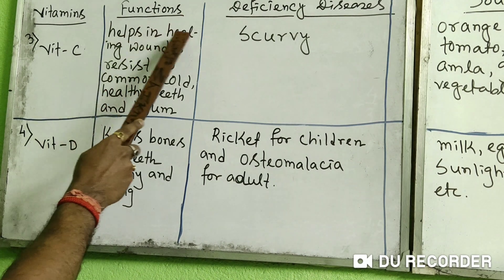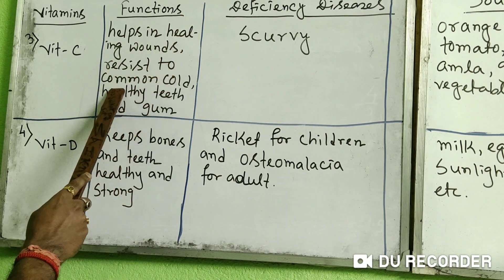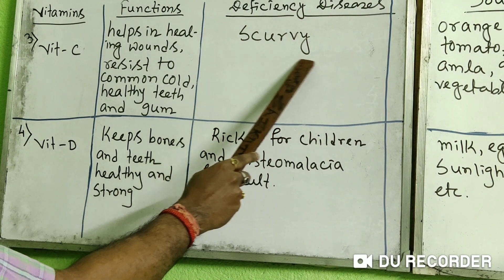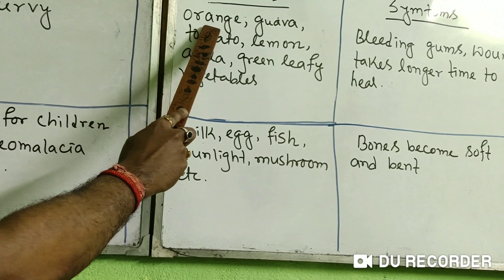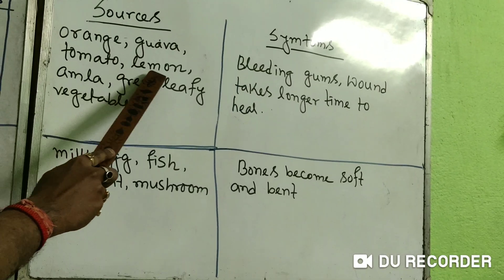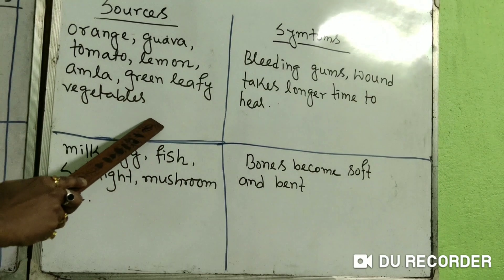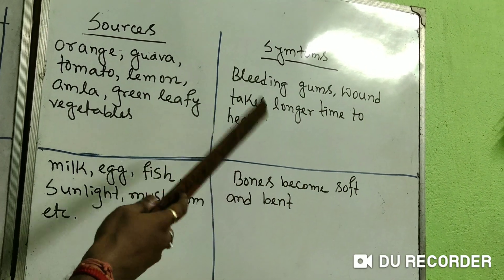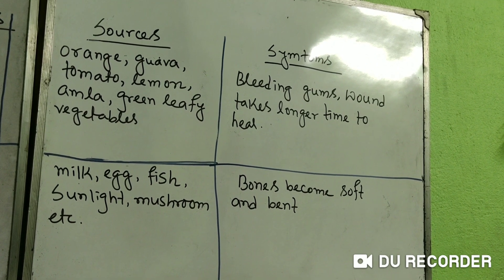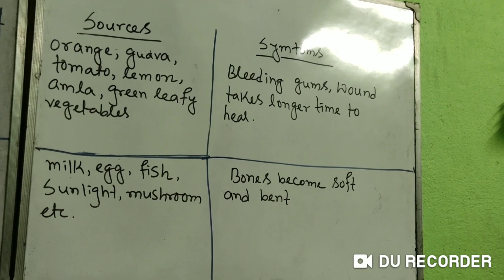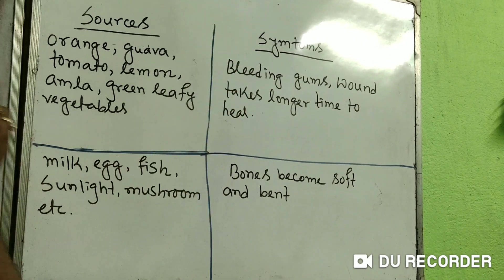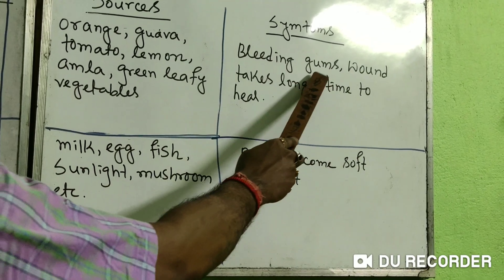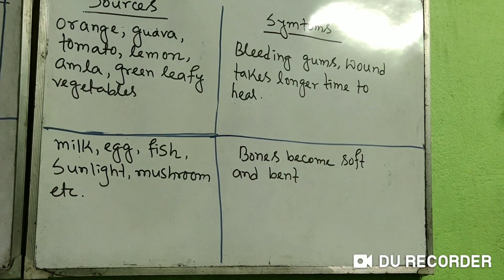Next is Vitamin C. Its functions are: helps in healing wounds, resistance to common colds, and healthy teeth and gums. The deficiency disease is scurvy. Sources include orange, guava, tomato, lemon, amla, and green leafy vegetables. Symptoms are bleeding gums and wounds taking a longer time to heal. If your body lacks Vitamin C, it may face these symptoms due to the deficiency disease of scurvy.